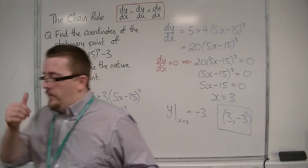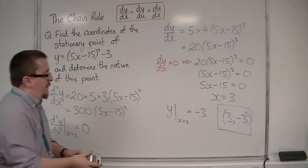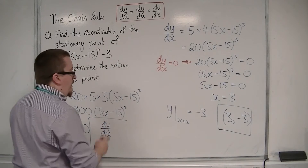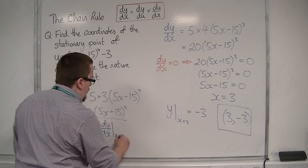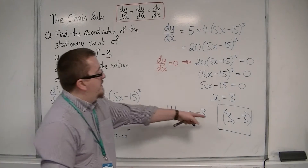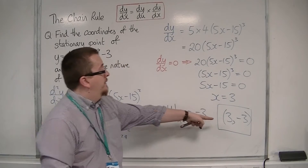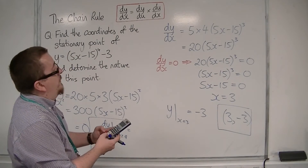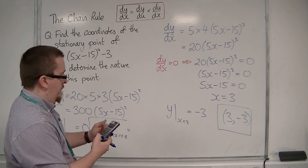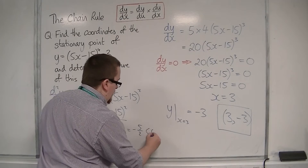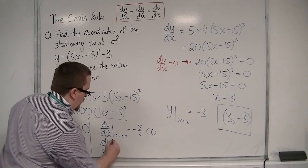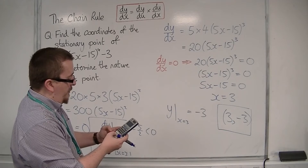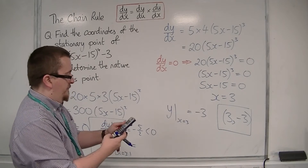This is where I'd get my calculator. We're going to look at dy/dx, the gradient of the curve, either side of the stationary point. I'll look at x = 2.9 and x = 3.1. Substituting 2.9 into the first derivative: 20 × (5×2.9 - 15)³ = -5/2, which is negative. Then substituting 3.1: 20 × (5×3.1 - 15)³ = 5/2, which is positive.